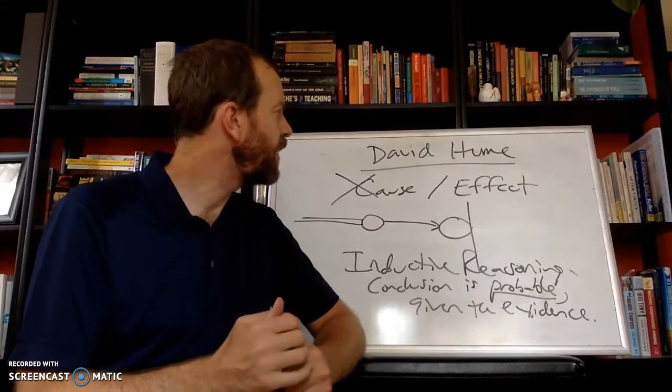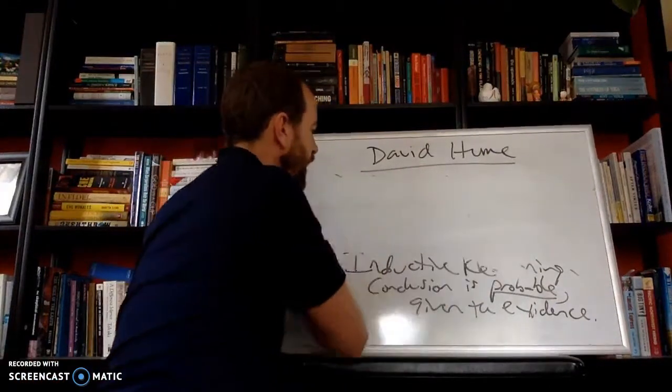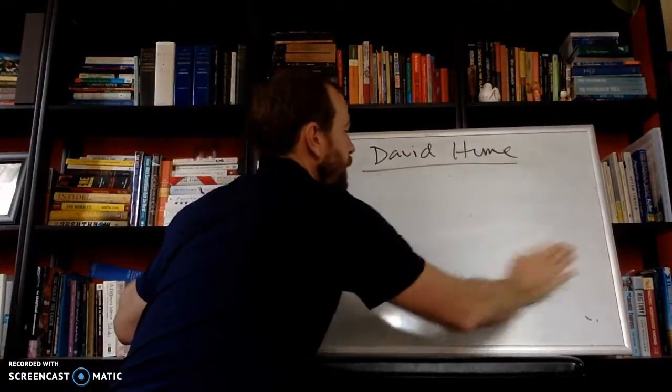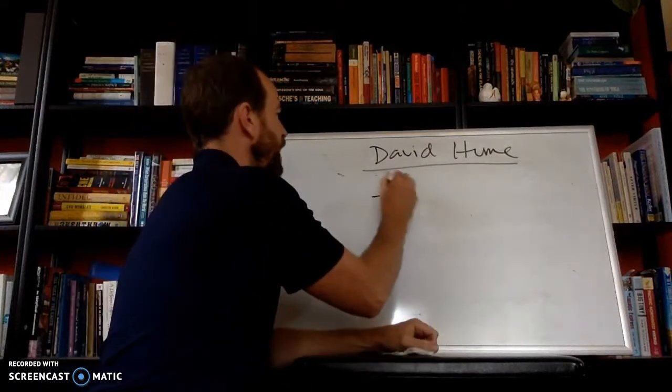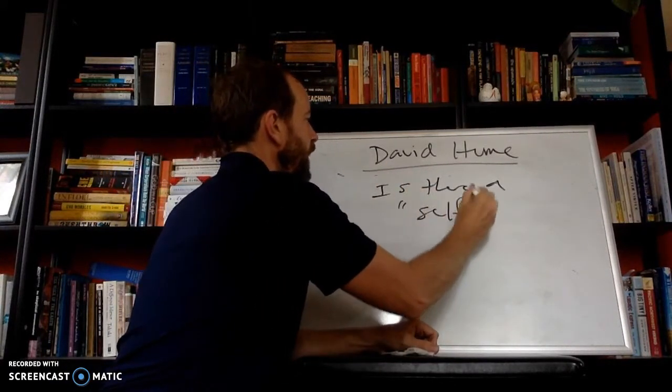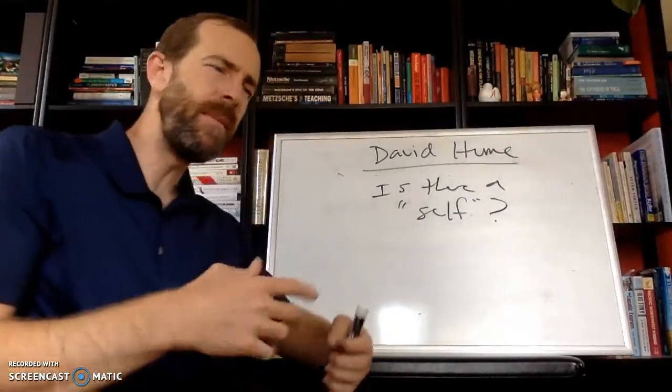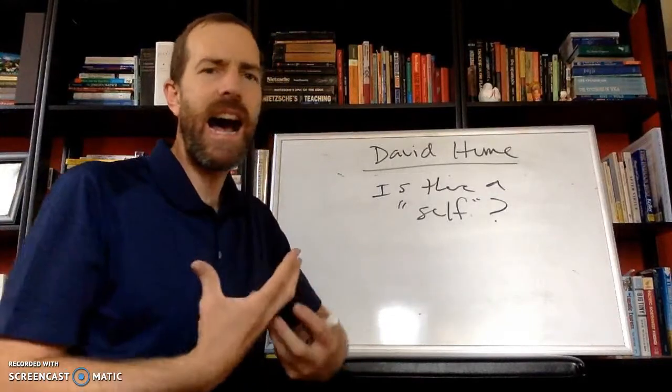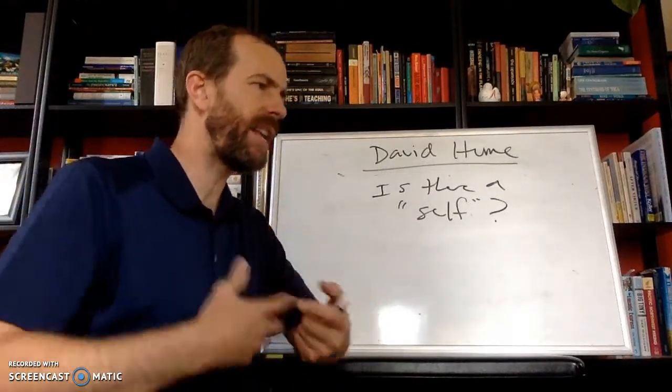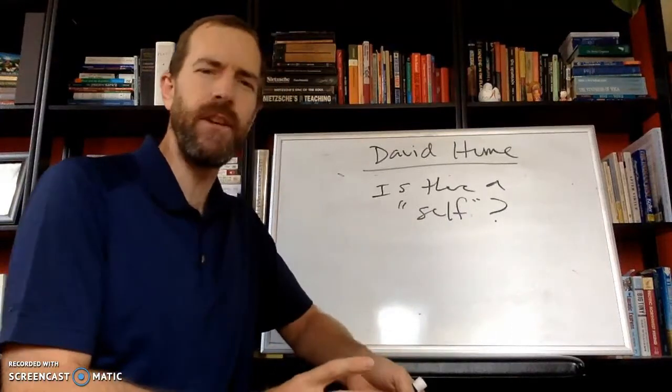So David Hume does the same when contemplating the self. Is there a self? Well, we're going to see some correlations here with Buddhism. When you look for the I, the ego, the me that underlies all change, what do your impressions give you?